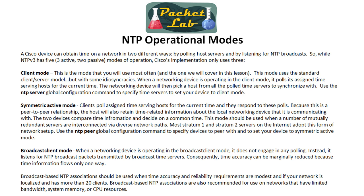Instead of being polled, you can set up broadcasts. R1 gets its information and just broadcasts it out, and whoever is listening will get that information. The downside is that broadcast-based NTP associations are less accurate because it's one-way traffic, and you have to be on the same subnet. But straight from the Cisco documentation: if your network is localized and has more than 20 clients, you might want to use broadcast client mode to save on bandwidth, system memory, and CPU resources.